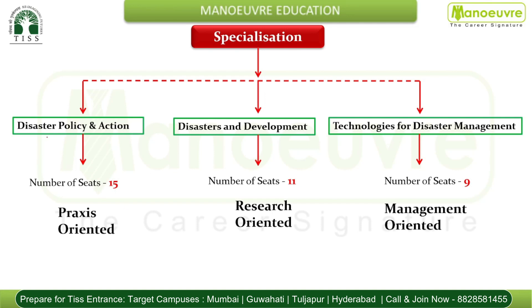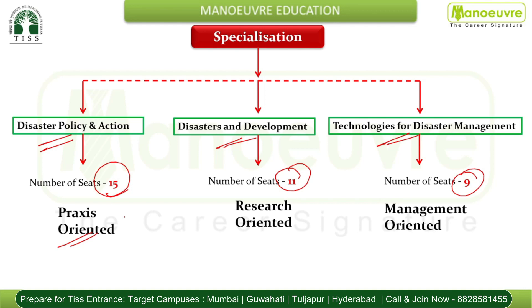In terms of seats per specialization: Disaster Policy and Action has 15 seats, Disasters and Development has 11 seats, and Technologies for Disaster Management has 9 seats. This program is praxis-oriented — meaning it focuses on using theory in a practical way. It is also research-oriented and management-oriented. All specializations are equally great, and you can check their syllabus in detail on the TISS website.